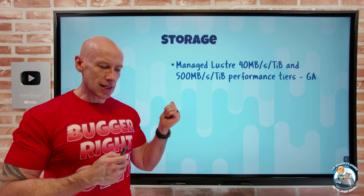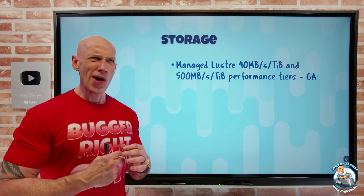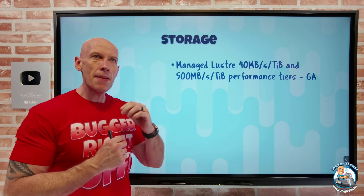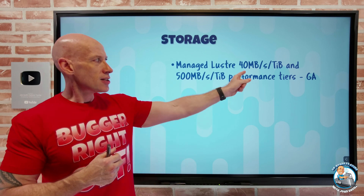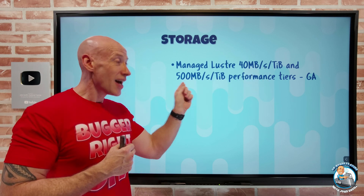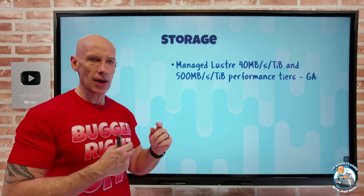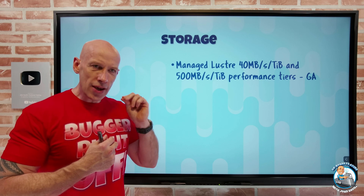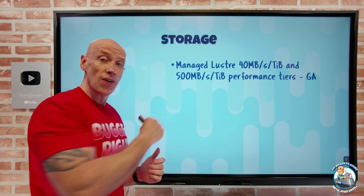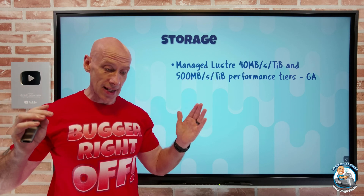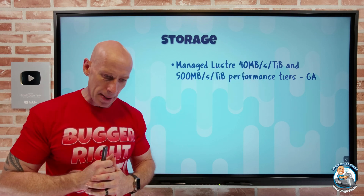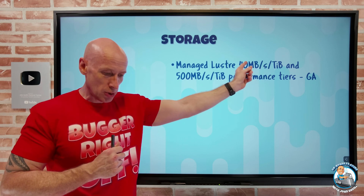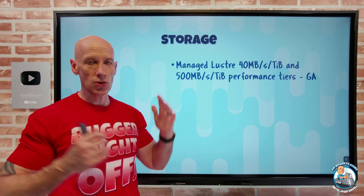On the storage side, managed Lustre — which is commonly used in high-performance computing where you need really high-performance storage with very high storage bandwidth — now has two performance tiers based on the amount of storage provisioned in terabytes. There's a 40 MB/s per terabyte provisioned tier, or a 500 MB/s per terabyte provisioned tier. The 500 MB/s option costs more, but if you have really high throughput demands with a smaller data set, it's fantastic. For very large data sets, the 40 MB/s per provisioned terabyte is likely better — up to 768 terabytes for that option, while the 500 MB/s tier is set at four terabytes.